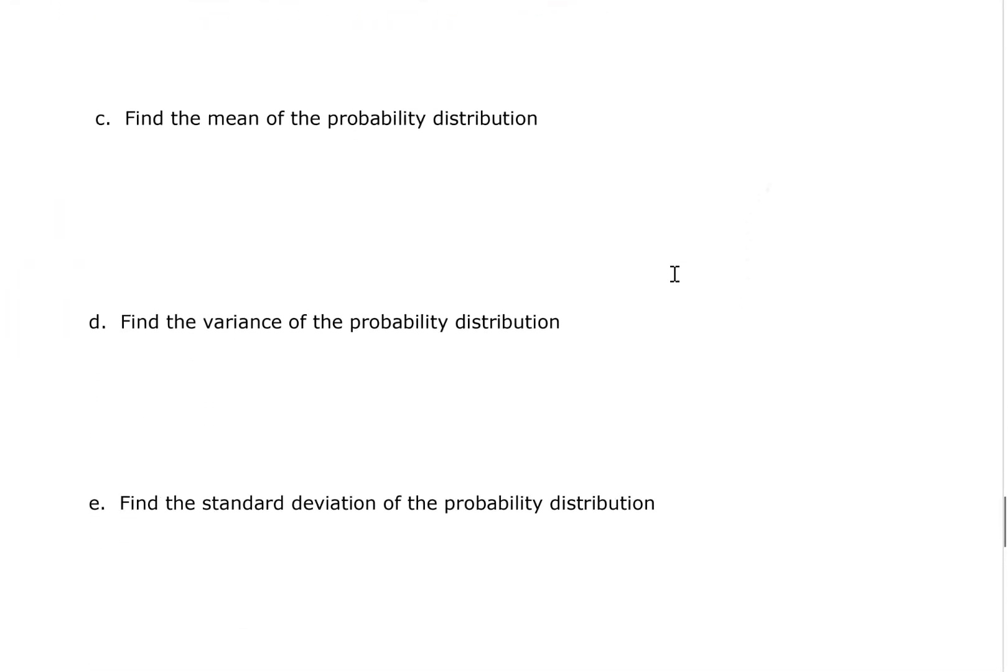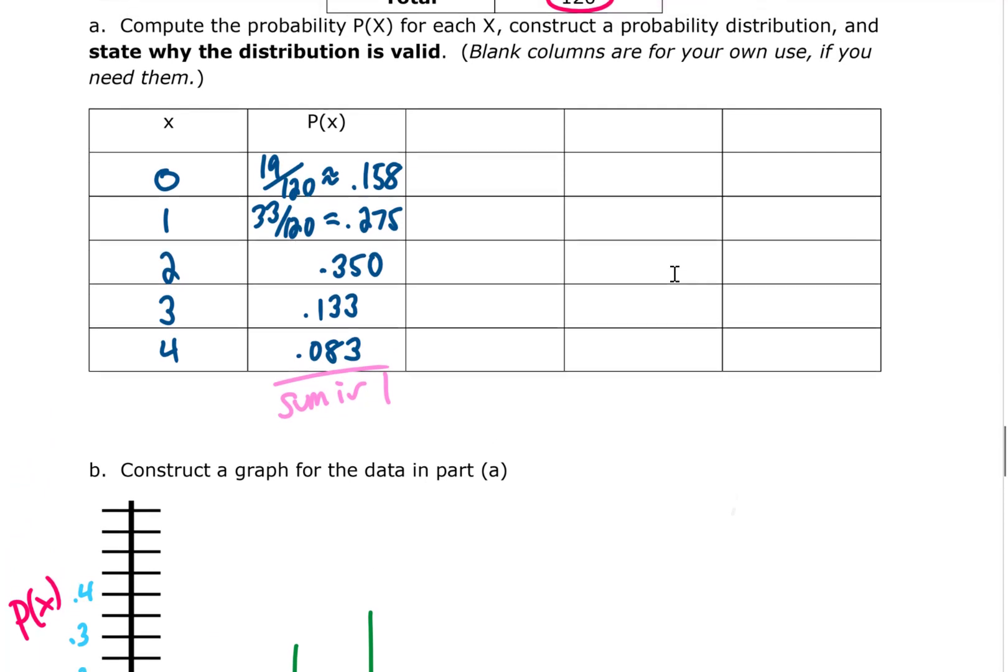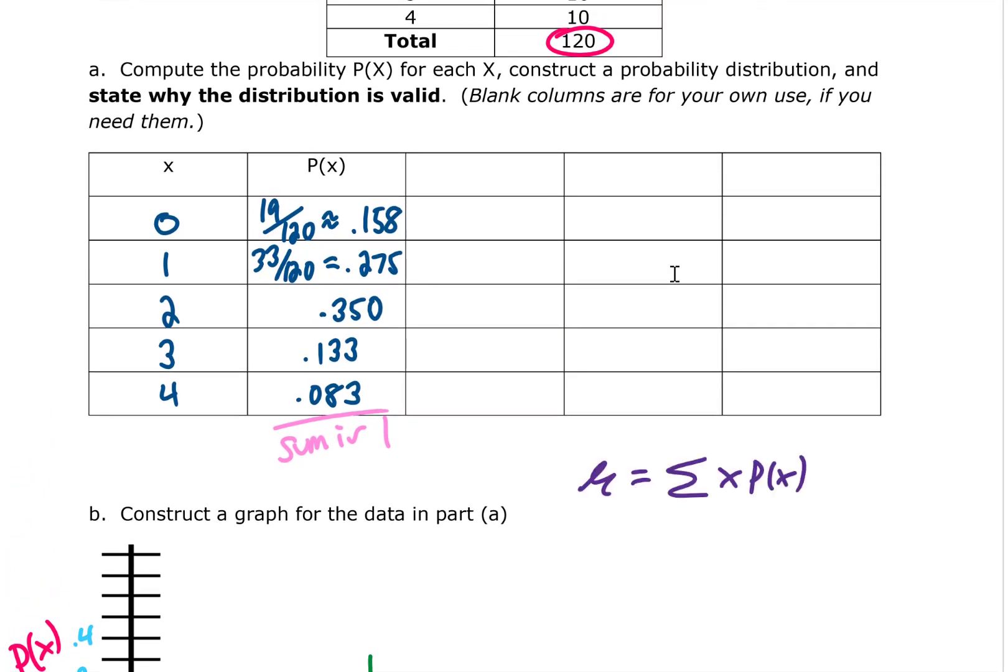We're going to find the mean of this probability distribution. As far as the mean or the expected value is concerned, we need to multiply all of our x's by our probabilities. If I take 0 times 0.158 I get 0. If I take 1 times 0.275 I get 0.275. If I take 2 times 0.350 I get 0.7. If I take 3 times 0.133 I'm rounding to 0.400. And if I take 4 times 0.083 I'm getting 0.333.